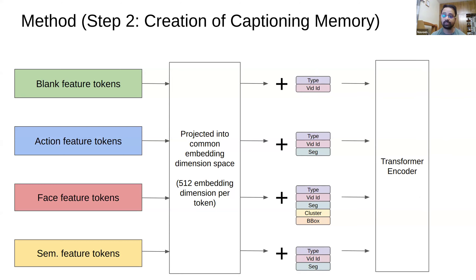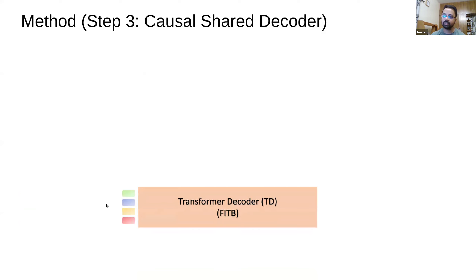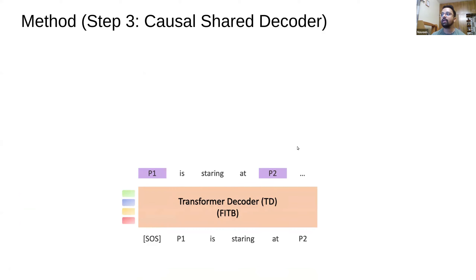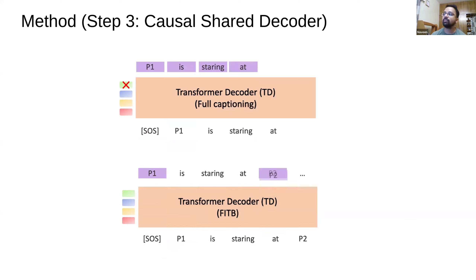For the decoder, we have a dual setup. The first is a transformer decoder for the fill-in-the-blank task — here we explicitly predict only the identity tokens (P1, P2, etc.) while the caption is passed as-is. In the second setup for full captioning, we don't pass text features and instead explicitly predict both the character identity tokens and the caption tokens together. Both tasks are trained jointly with shared parameters.